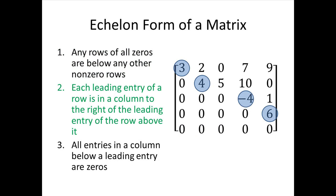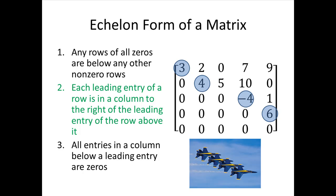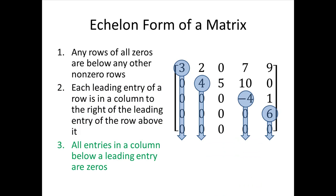For rule 2, we find the leading entry in each row by going left to right and finding the first non-zero entry. Rule 2 says that as we go down the rows, the leading entries must shift to the right — they go down and to the right. Compare that to the plane formation, and you'll see why we call it echelon form. For rule 3, imagine drawing an arrow down from each leading entry — everything below those leading entries must be zero.